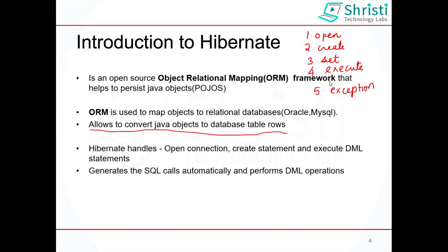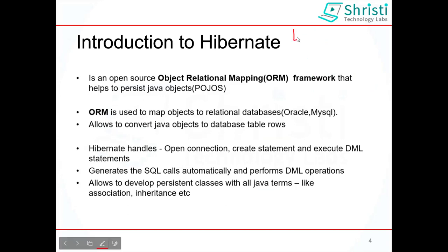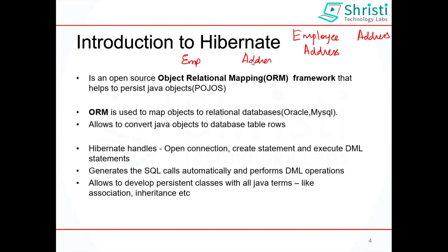One other important thing about Hibernate is that it helps to persist Java classes with Java terms like association and inheritance. For example, assume you have two classes: Employee and Address, where Employee has an instance of Address. If you want to save both objects using JDBC, you'd create two tables — employee and address — and use a primary key/foreign key relationship to store the address ID in the employee table. When working with Hibernate, it takes care of all these relationships using certain annotations, so you don't have the headache of creating primary or foreign keys manually.